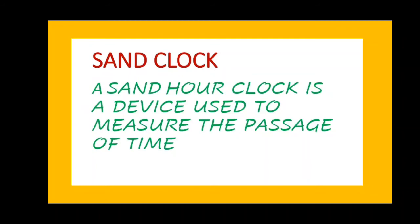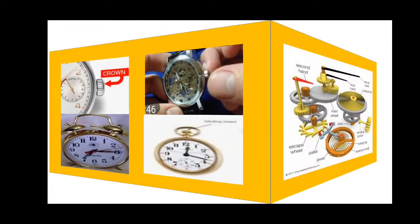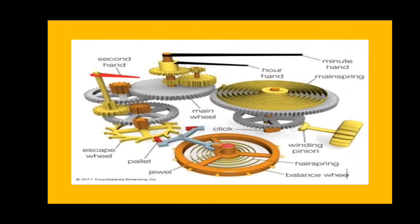Have you seen this part in the watch which is called a crown? Yes, nowadays when the battery is exhausted and after replacing it with a new battery, you adjust the correct time using the crown in your watch. Earlier this crown was used for winding, as you wind the key of a toy and the toy moves.